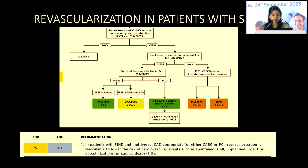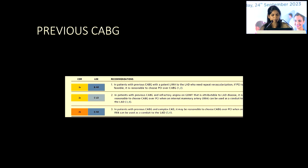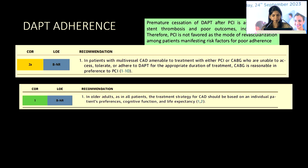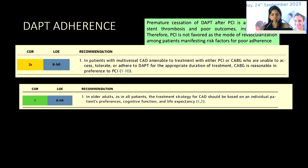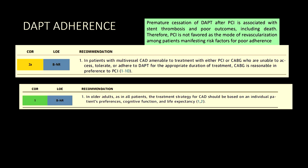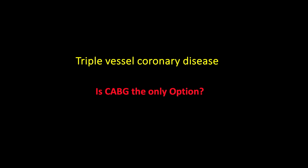Post-PCI, dual antiplatelet therapy must be given for at least one year, weighing ischemic and thrombotic benefits. If a patient has issues continuing DAPT, CABG becomes a preferable option.